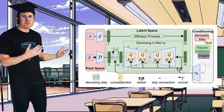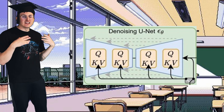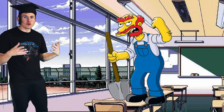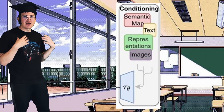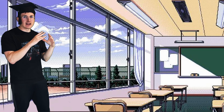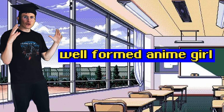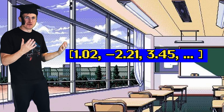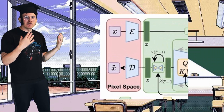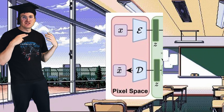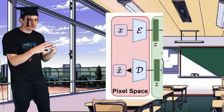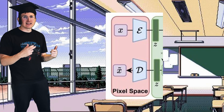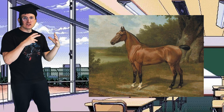Our model has three main components. First, the U-Net, which you can think of like the janitor that learns to remove noise from your images. Then we have the text encoder, which takes your prompt — like 'well-formed anime girl' — and turns it into a list of numbers that the U-Net can understand. Finally, a variational autoencoder, which is able to turn any image into a lower dimensional space and then also reconstruct it. You can think about it like turning a painting into a sketch, and then that sketch back into the original painting.